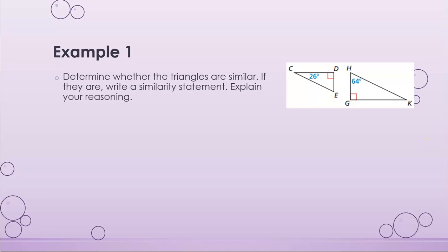To find the measure of angle E I need to subtract from 180. I have 180 degrees, and I know the right angle corner is 90 and angle C is 26. So I do 180 minus 90 minus 26, which gives me 64 degrees. That means angle E is 64 degrees, which is the same as angle H.